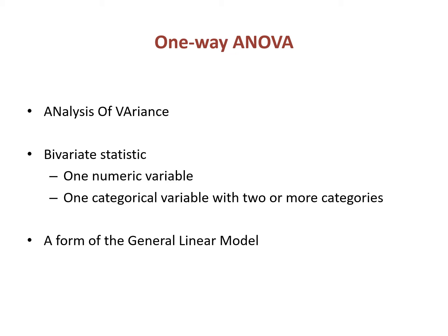So ANOVA, in this case, means Analysis of Variance. You'll notice there I capitalize the letters that are used to create the word ANOVA. It is a bivariate statistic. We use it when we have one numeric variable and one categorical variable with two or more categories. It's different from a t-test in that with a t-test, we can only have two categories, but with ANOVA, we can have more.